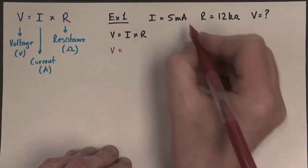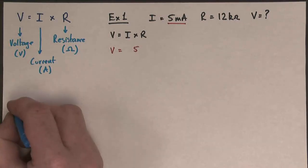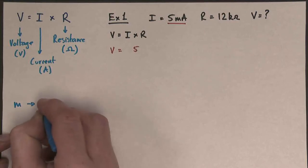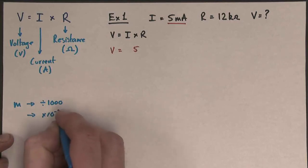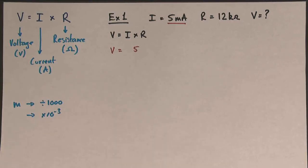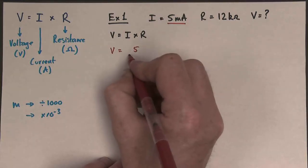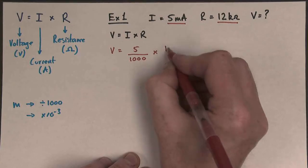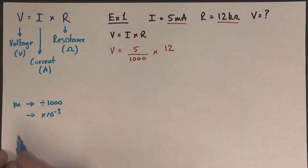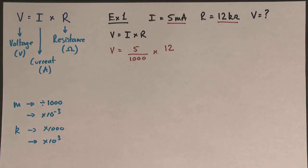So V equals, now the I is 5 milliamps. Now, we should know that milli, if we look at it, milli means divide by 1,000, or milli means times 10 to the minus 3. That's what it actually means. That's, as a prefix, it's what it has a meaning of. So our problem becomes 5 milliamps, 5 divided by 1,000, times the resistance, which is 12 kilo-ohms. So it's times 12. And then we should know that K, kilo, means times 1,000, or it means times 10 to the 3. That's what kilo means.